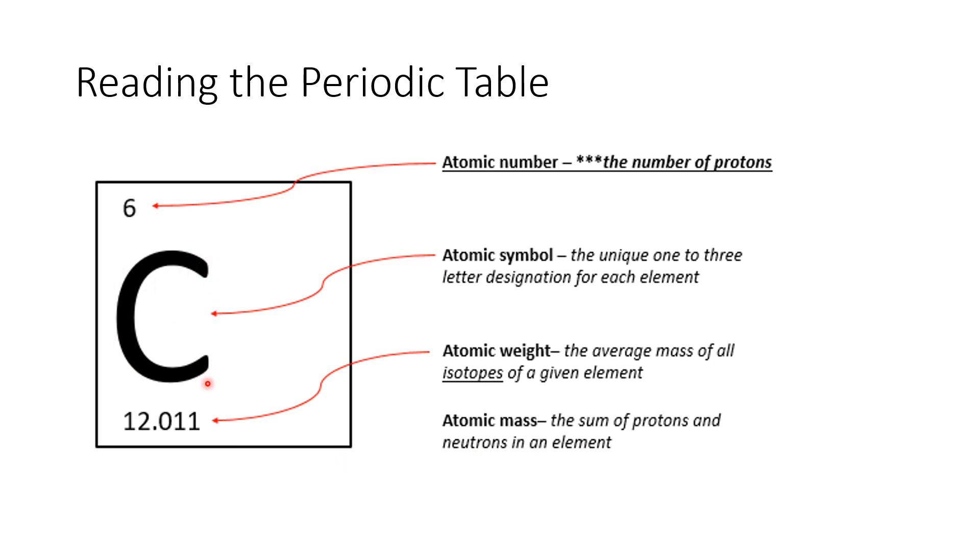Carbon, or any other element, can exist with more neutrons or less neutrons, making it heavier or lighter. So the atomic weight, which you see here, is an average of all the masses that exist. Those are called isotopes, and we'll deal with that in the next video.